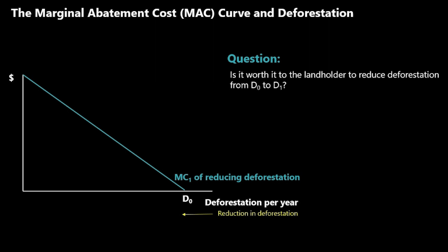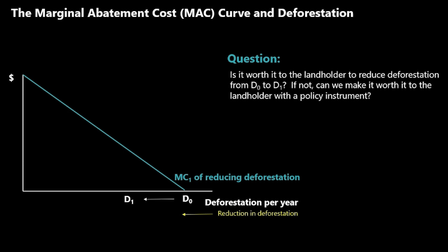The question we want to answer is: is it worth it to the landholder to reduce deforestation from D0 to D1, as seen in the graph? If not, can we make it worth it to the landholder with a policy instrument?